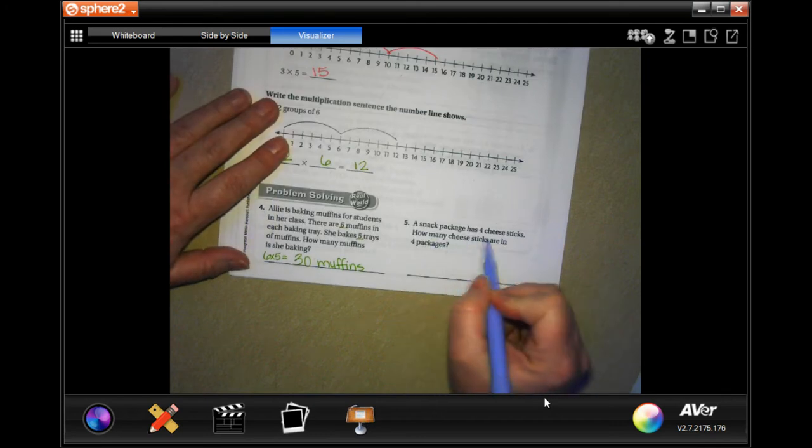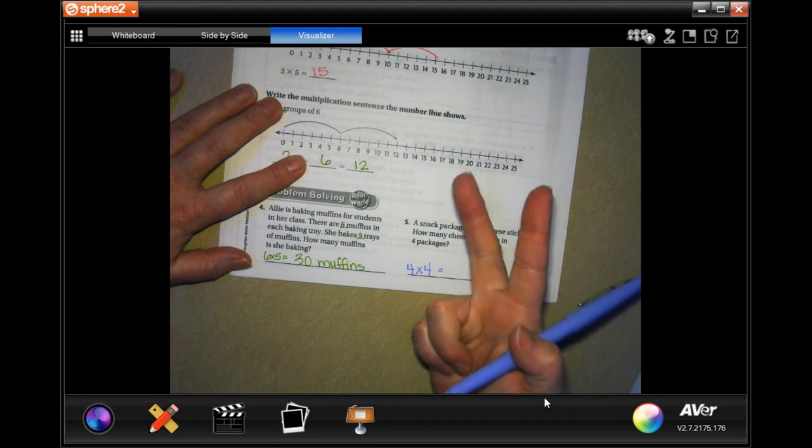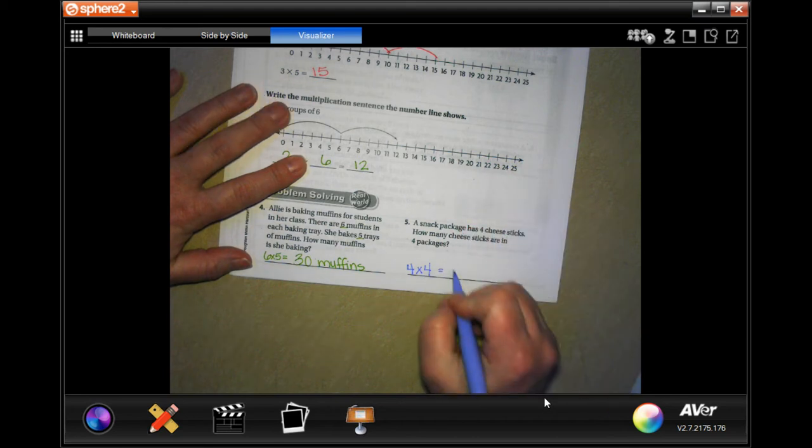A snack package has four cheese sticks. How many cheese sticks are in four packages? Well, four packs and four cheese sticks in each one. Well, four, eight, twelve, sixteen. Sixteen cheese sticks.